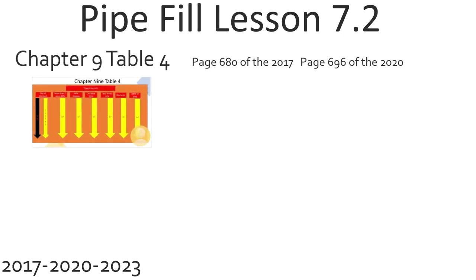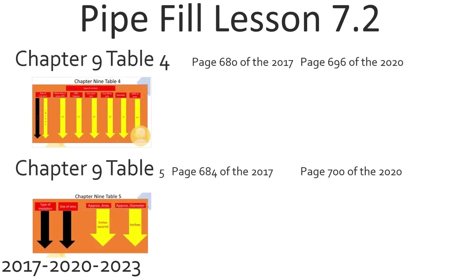We're going to learn about Chapter 9 Table 4 and Chapter 9 Table 5. Chapter 9 Table 4 is on page 680 of the 2017 NEC and page 696 of the 2020 NEC. This video is also 2023 compatible. If you've used the Mike Holt tabs that we recommend, you'll have a Chapter 9 Table 4 tab and you can flip there now.